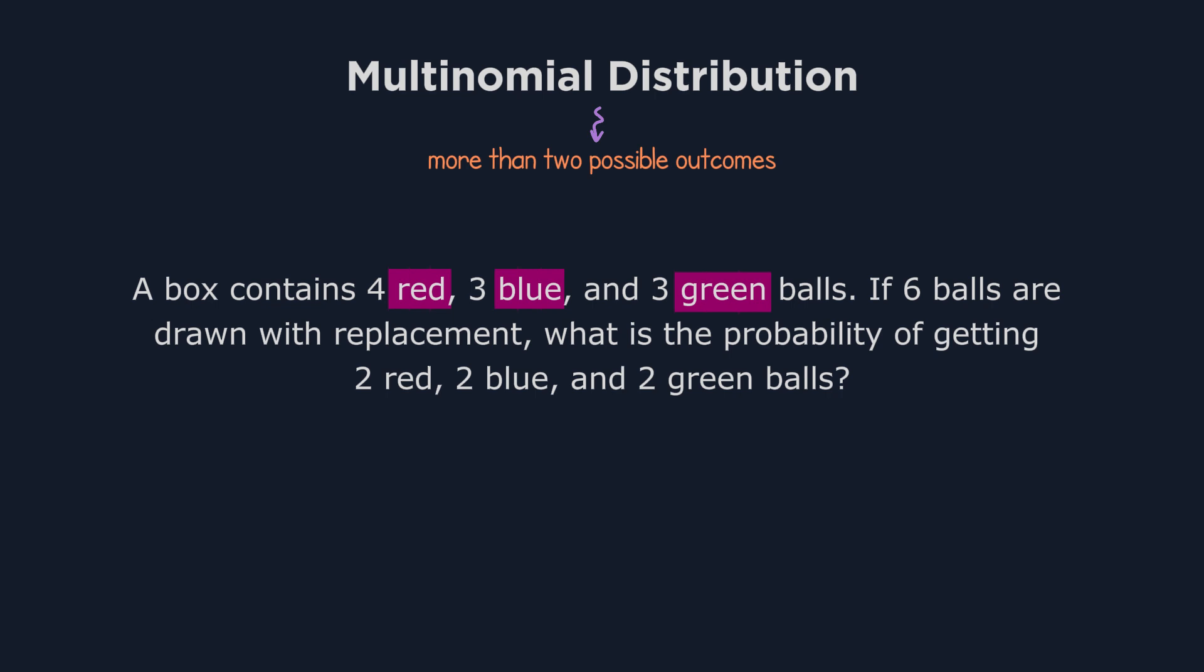And we're counting how many of each color appears in a fixed number of trials. This is what makes the problem different from binomial, geometric, or negative binomial problems.